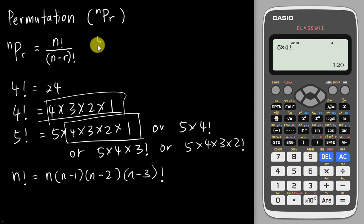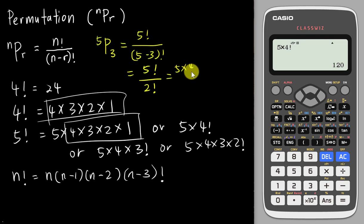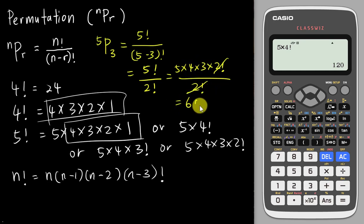Let's say we have 5P3. Based on the formula, this equals 5 factorial over (5−3) factorial, which is 5 factorial over 2 factorial. Expanding the numerator: 5 × 4 × 3 × 2 factorial, and we stop at 2 factorial because it cancels with the denominator. So 5 × 4 × 3 = 60. On the calculator, press 5, then shift and the multiply button for P, then 3 — giving 5P3 = 60.